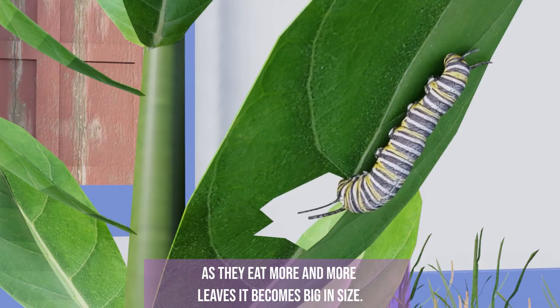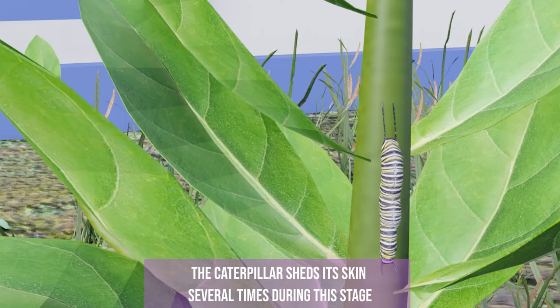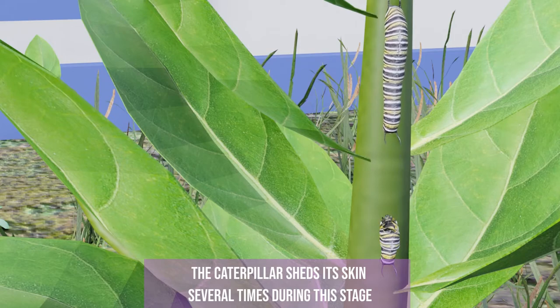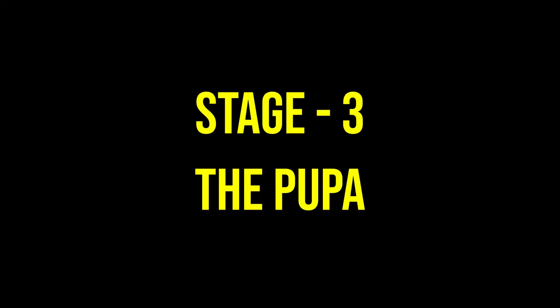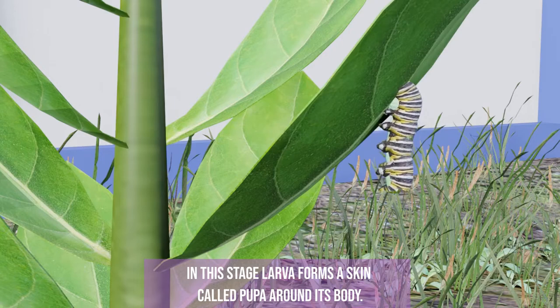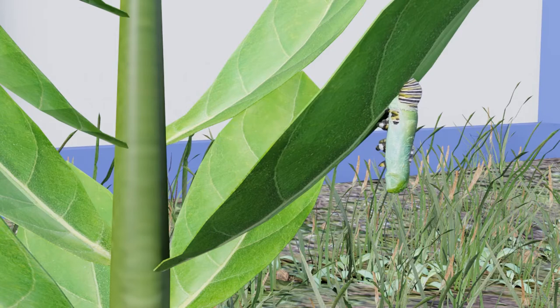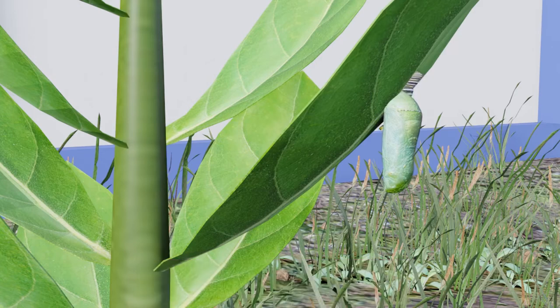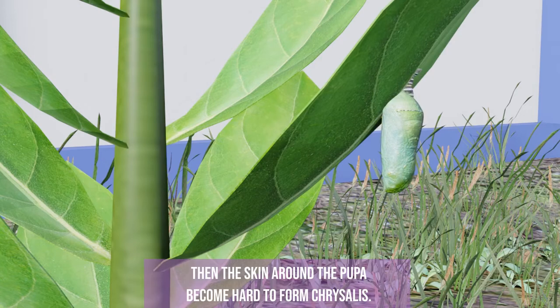The caterpillar sheds its skin several times during this stage. Stage three: the pupa. In this stage, the larva forms a skin called a pupa around its body. Inside the pupa, the caterpillar gradually grows and develops. Then the skin around the pupa becomes hard to form a chrysalis.